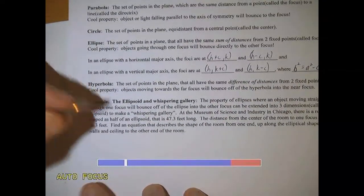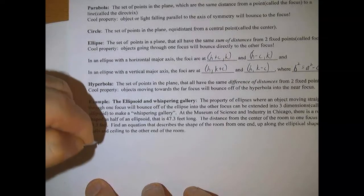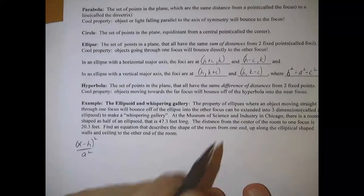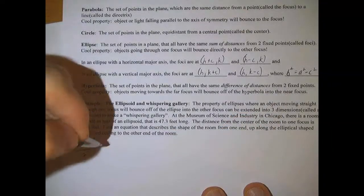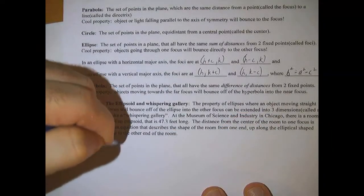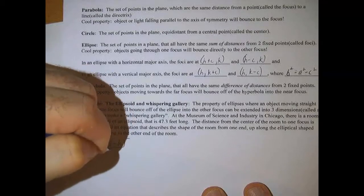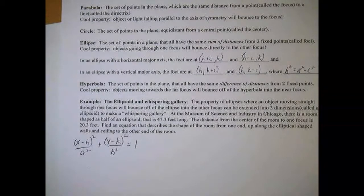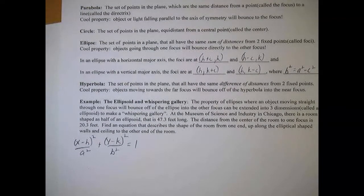And just a reminder that an ellipse in general is x minus h squared over a squared, there's the a that we're talking about right here, the a squared, plus y minus k squared over b squared, and there's the b that we're talking about right there, equals 1. That's our general formula for an ellipse.